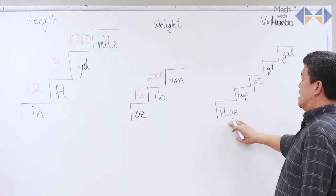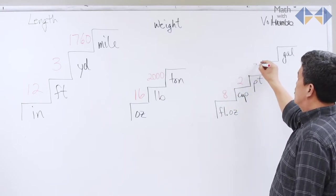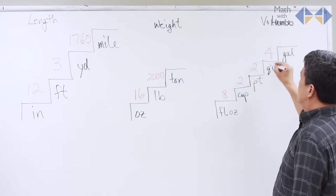And when it comes to volume, fluid ounces to cup, there are 8 of them. Cups to pint is 2, 2 pints to a quart, and 4 quarts to a gallon.